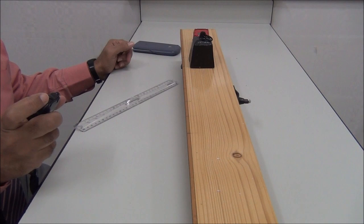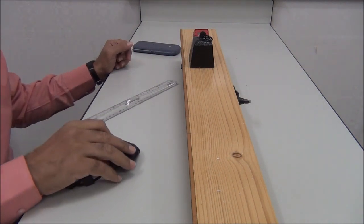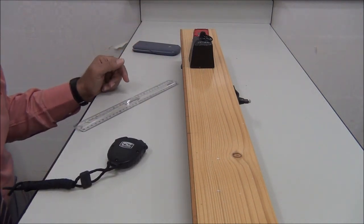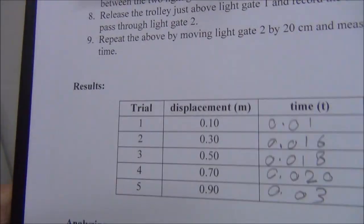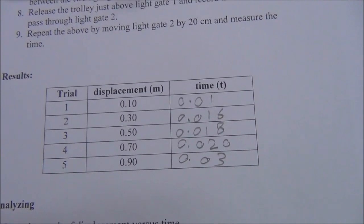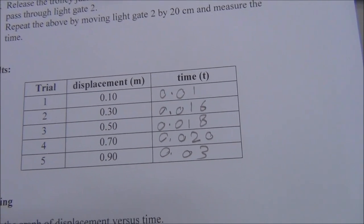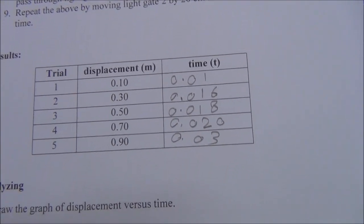0.01 seconds, so this is the time for the first 10 centimeters. These are the results of this experiment. When the displacement is 0.1 meters, the time is 0.201 seconds.